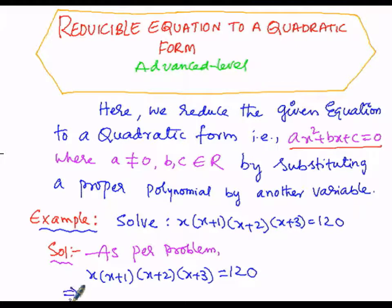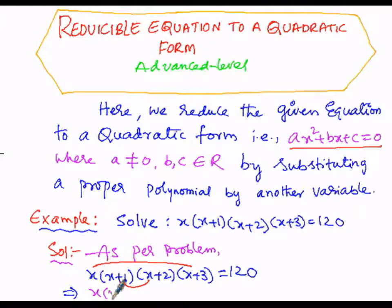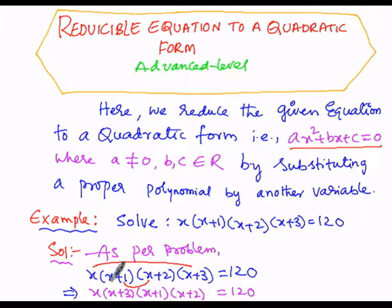We are going to replace and rearrange the terms. I am going to rearrange these factors by pairing the first and last together, and the middle two together. So: x·(x+3) and (x+1)·(x+2) = 120. By rearranging, we got this logical step by rearranging the terms on the left-hand side.